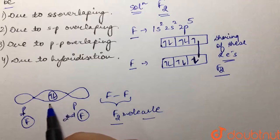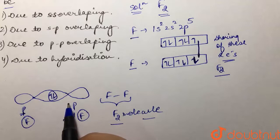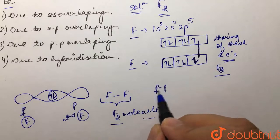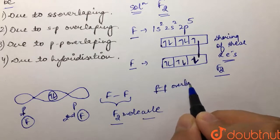So we can see that there is what? PP overlapping. S orbital is not involved in fluorine molecule bonding. We can say that there is PP overlapping that is taking place.